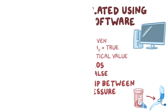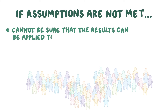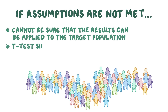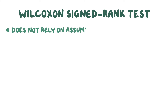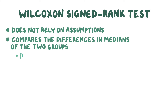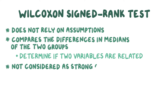Finally, it's important to keep in mind that if the assumptions of an unpaired t-test are not met, we can't be sure the results can be applied to the target population, so a t-test shouldn't be used. Instead, we could use a non-parametric test called the Wilcoxon signed rank test, which doesn't rely on parametric assumptions. The Wilcoxon signed rank test compares the differences in medians of the two groups to determine if the two variables are related — in this case, if medication affects blood pressure. Parametric tests are generally favoured over non-parametric tests, so the results of the Wilcoxon signed rank test are not considered as strong evidence for a relationship compared to the t-test.